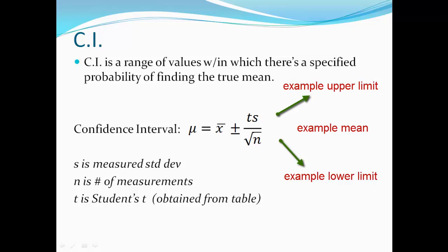Remember, you have a lower limit, which is X minus TS over square root of N, and then the upper limit, which is X plus TS over the square root of N. All right, let's do a problem.